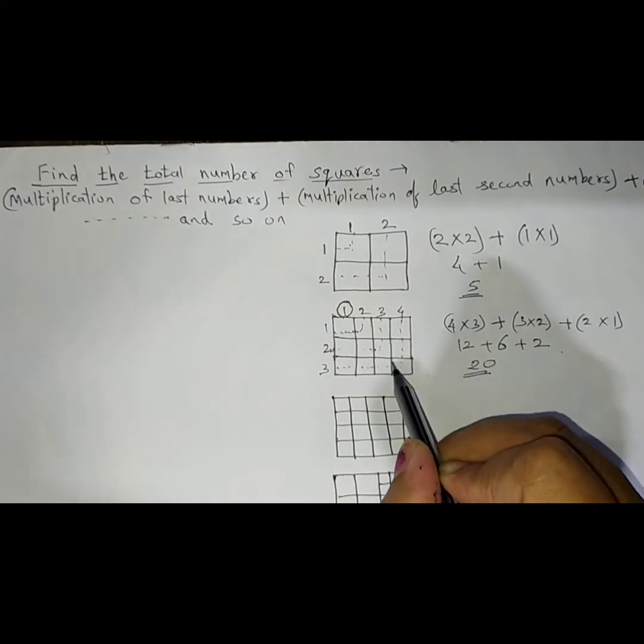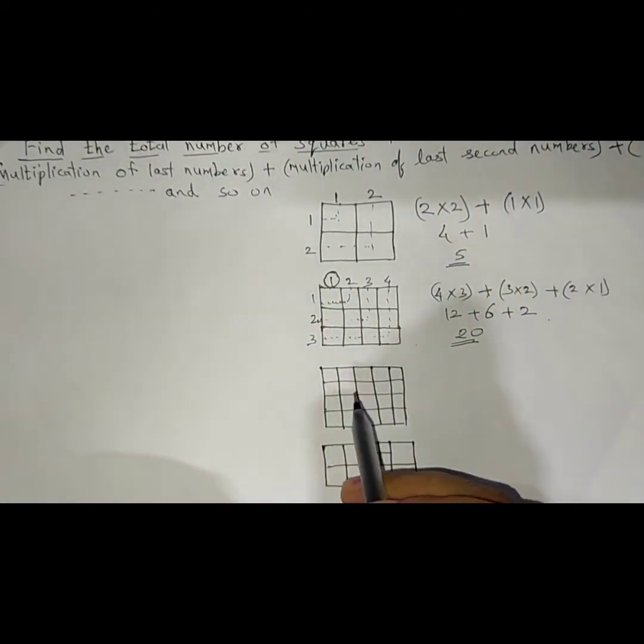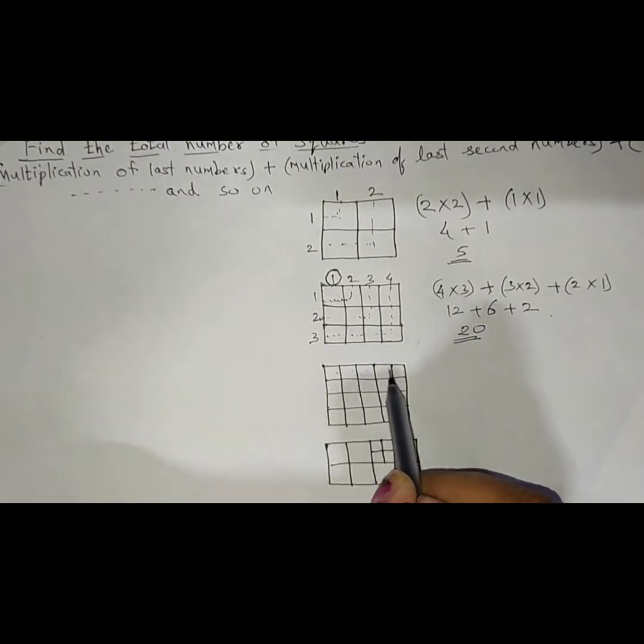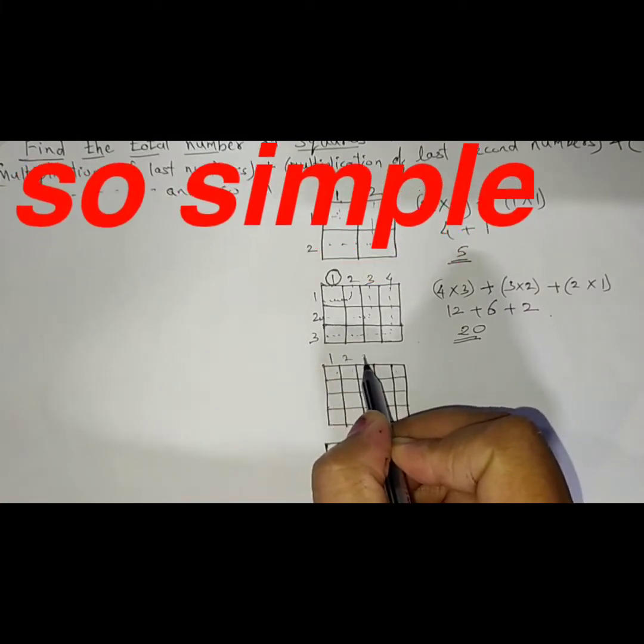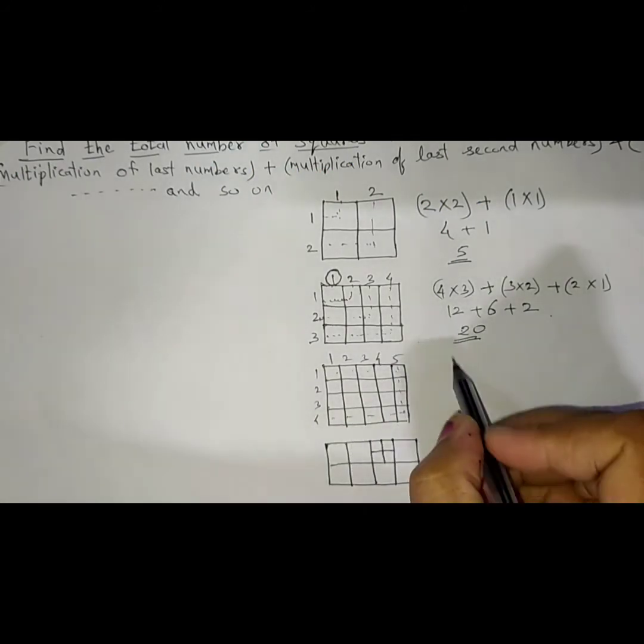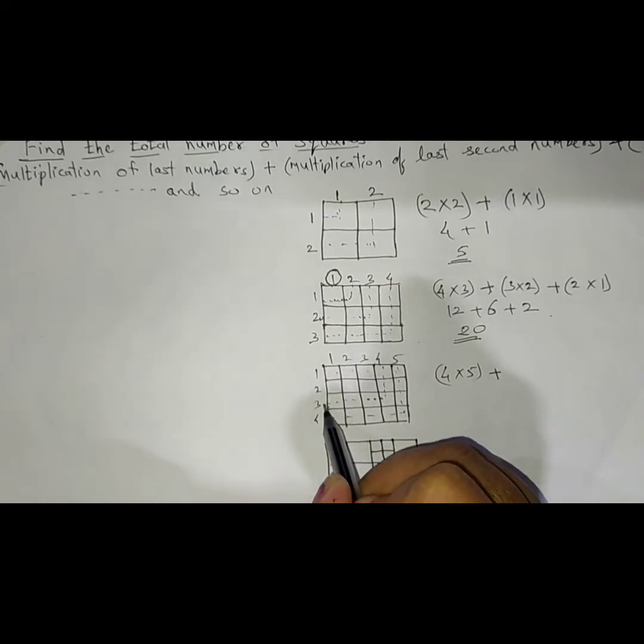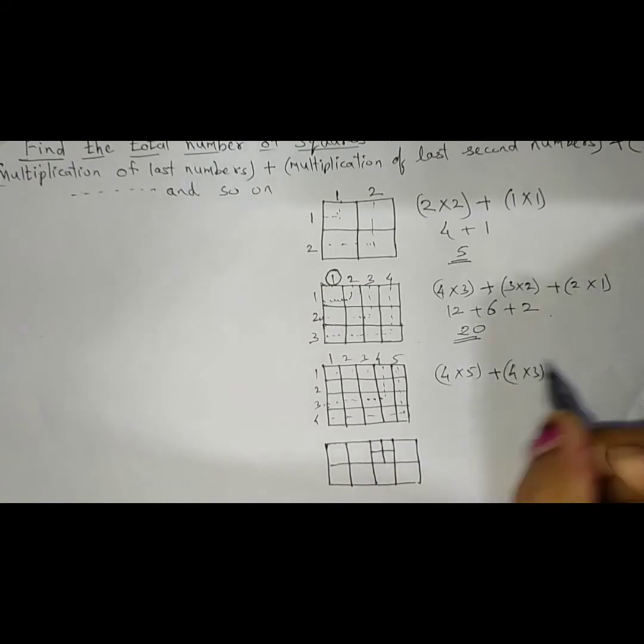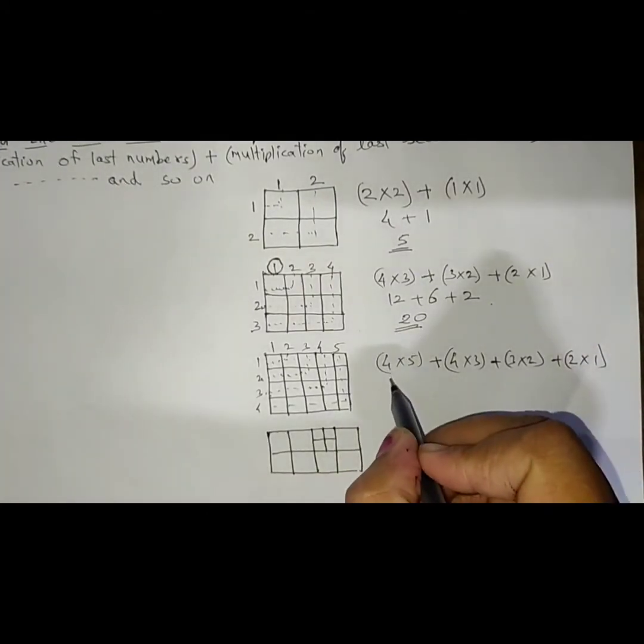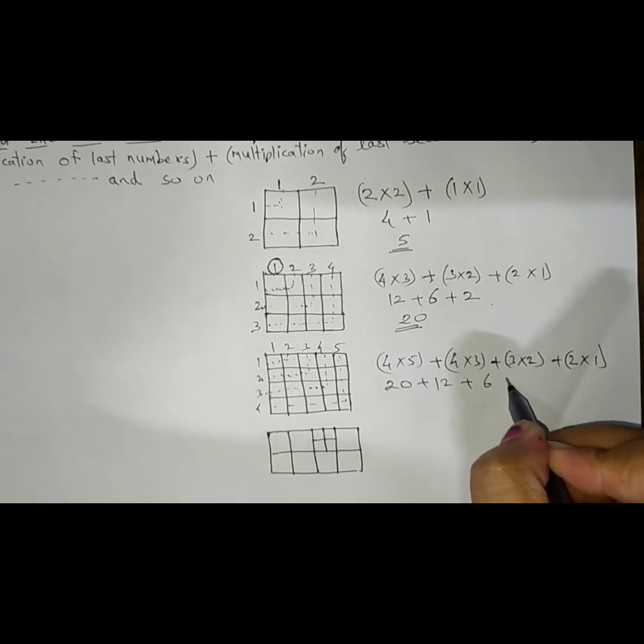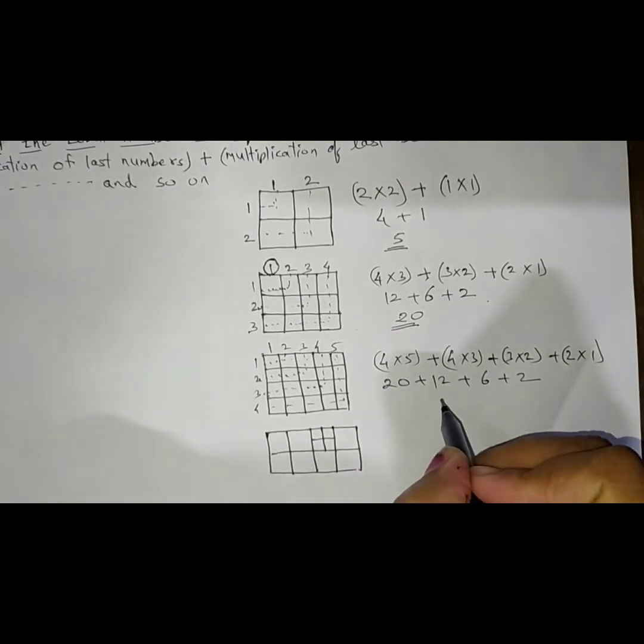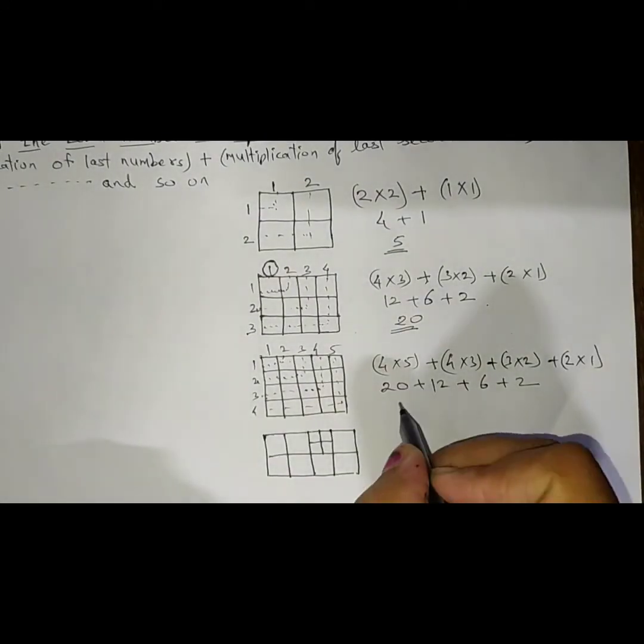So these many squares are present in this box. Now again let's see some more examples. If this is the condition. Just instead of counting each and every square, go by step 1: 1, 2, 3, 4 and 5. 1, 2, 3 and 4. What are the last numbers here? 4 multiply by 5 plus. Again see what's the next: 4 and 3. So here let's write 4 multiply by 3. The next is 3 multiply by 2 plus. Here 2 into 1. Find out: 4×5 is 20, 4×3 is 12 plus 6 plus 2. And if you calculate all this, you will just get the answer. Here you get 40.